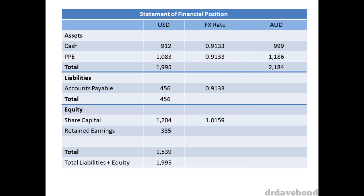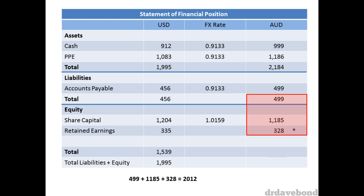When we put all these rates in and translate them, we're left with a problem. This problem is that the sum of the translated liabilities and equities does not equal the sum of the translated assets. Accountants love a balance sheet to balance, even though we don't call it a balance sheet anymore. So paragraph 39c requires that all other exchange rate differences be recognised in OCI, which is why we have a foreign currency translation reserve of 172. This is simply the balancing item. Thank you for watching.